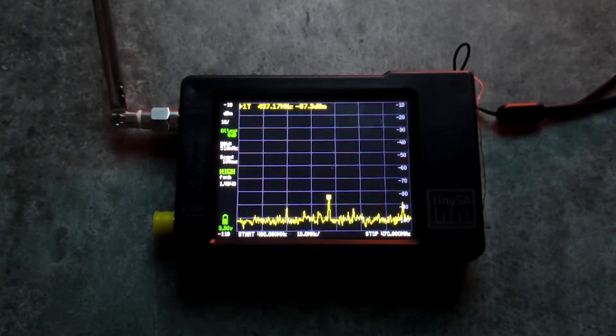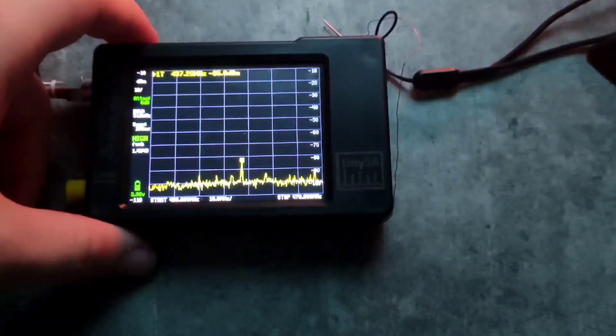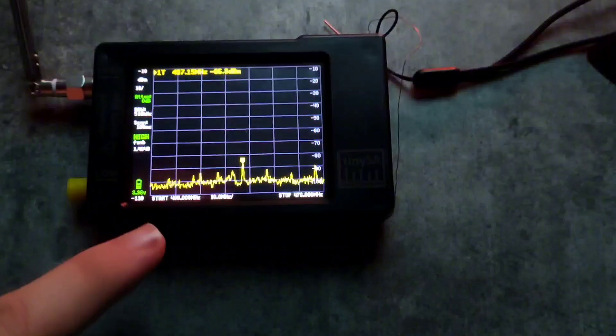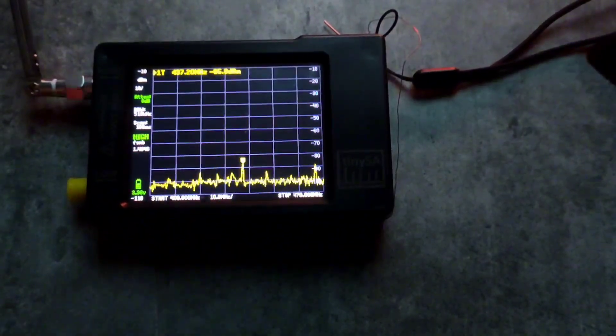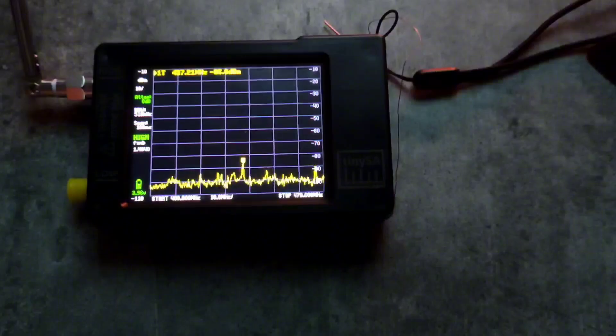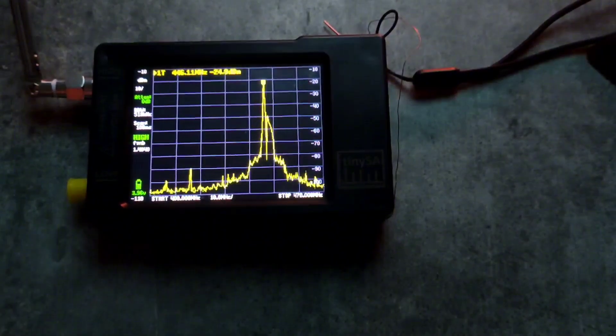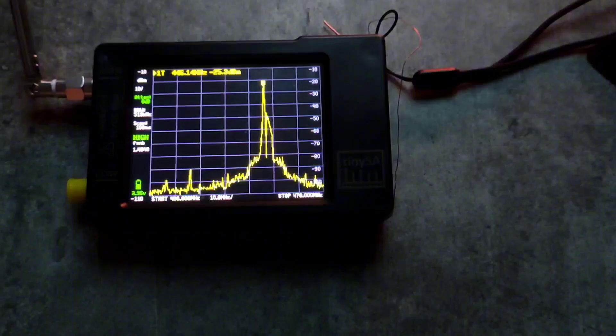The final test that I will do with this TinySA to show you is with a walkie-talkie. Here I have a walkie-talkie. I have centered this around 400 MHz to 470 MHz and I will do the walkie-talkie at the distance. I will press it and talk and as you can see we have a peak, actually 2 peaks, which confirms our walkie-talkie.